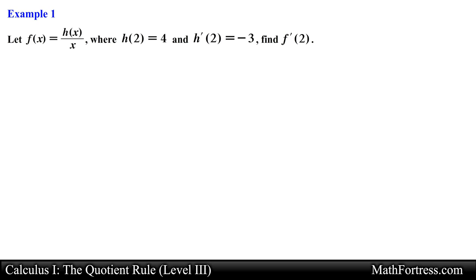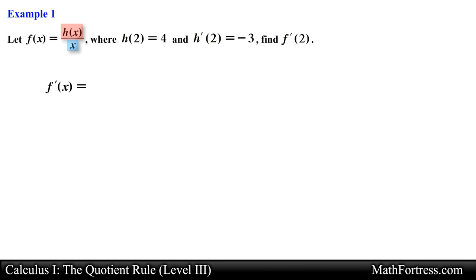If f equals h over x where h of 2 equals 4 and h prime of 2 equals negative 3, find f prime of 2. Here we are asked to find the derivative of f evaluated at x equals 2. Let's first find the derivative of f before we attempt to evaluate it. Notice that f is formed by the quotient of two functions, in this case h and x, so we have to apply the Quotient Rule.